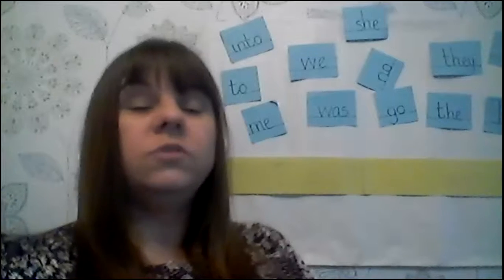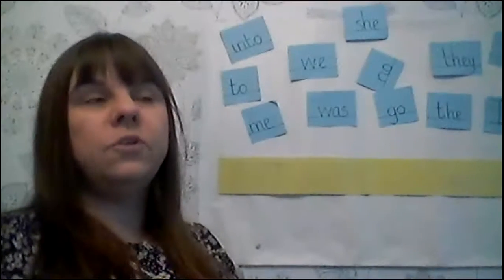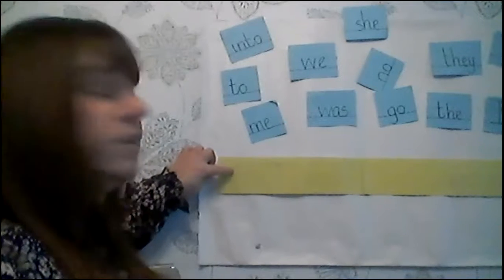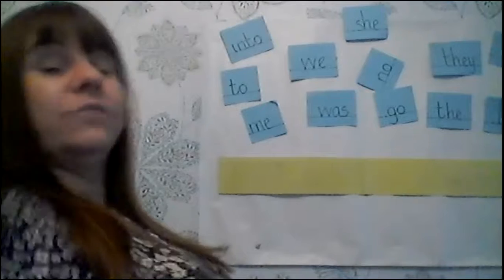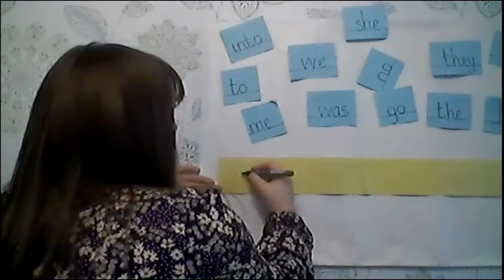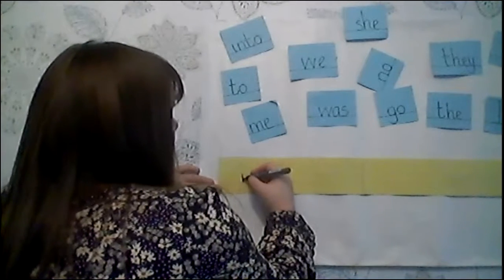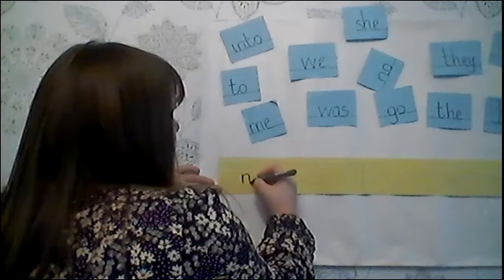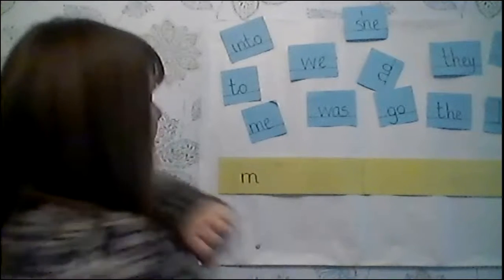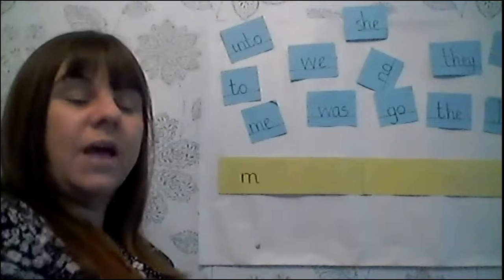I'm just going to model one for you — I'm going to model the N. It's not a tall letter so it doesn't reach the top line, it only reaches halfway. It does have a straight back. We start off with a nice straight back: down, up, arch back, down, up, arch back, down and flick. That's our N.